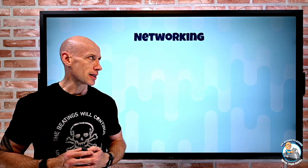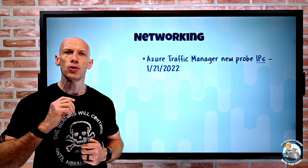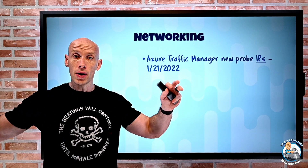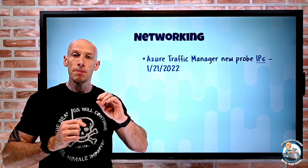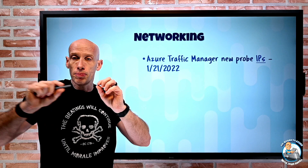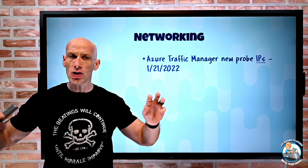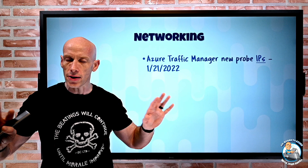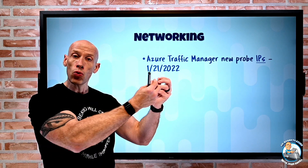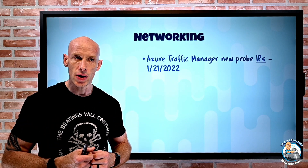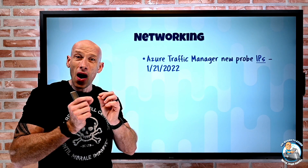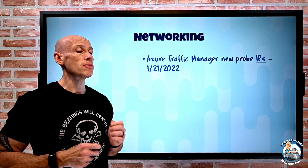On to what Azure did. Azure Traffic Manager has announced some new probe IPs. Traffic Manager is that global geo-distribution system — it uses DNS that can point to services in different Azure regions, on-premises, different clouds, whatever that might be. But to check they're healthy, it has to go and probe, and that probe will come from certain IP addresses. If you're restricting that inbound flow by IP address, there are going to be some new ones.